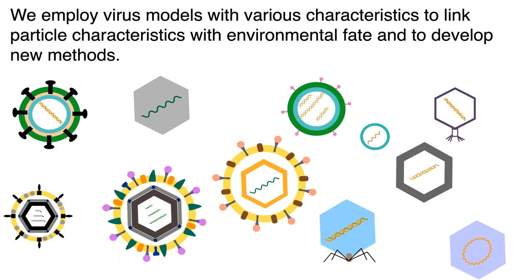My group uses a lot of surrogate viruses — mostly phage. A bacteriophage and a human virus are very similar in structure: same genomic material types, same basic protein building blocks, same envelope composition, just from different host cells. The more we can characterize how different characteristics of phage impact their fate and ability to be detected, the better we can extrapolate to human viruses, which are much more difficult to work with and quantify.